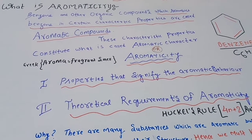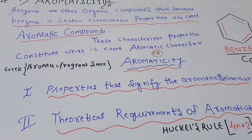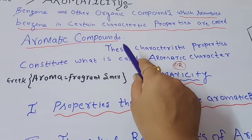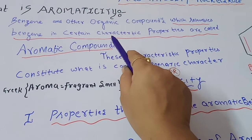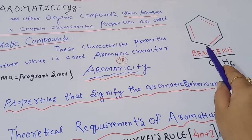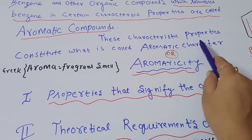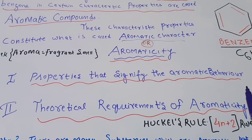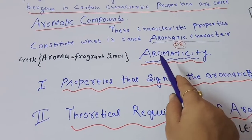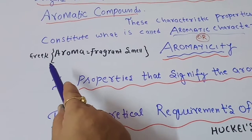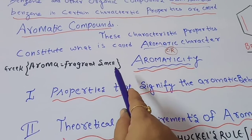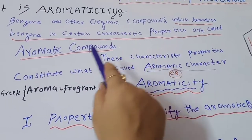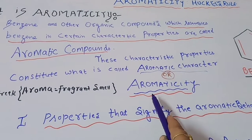So what is aromaticity? We all know benzene, and other compounds which resemble benzene in certain characteristic properties are called aromatic compounds. Those compounds which have resemblance with benzene are known as aromatic compounds. These characteristic properties constitute what is called the aromatic character, which we can also term as aromaticity. The word aroma means fragrant smell.